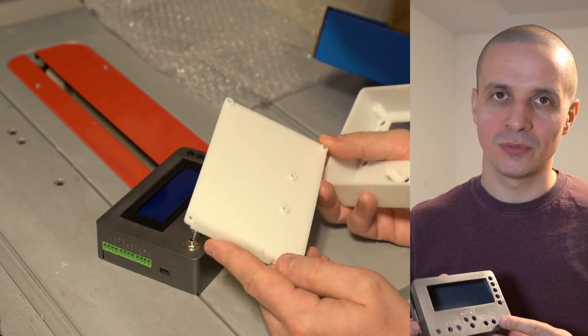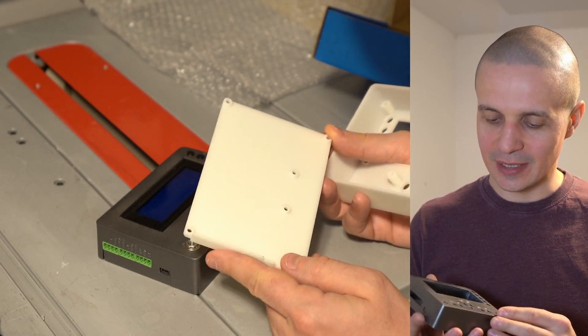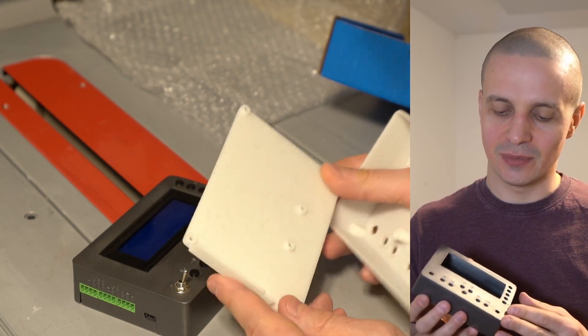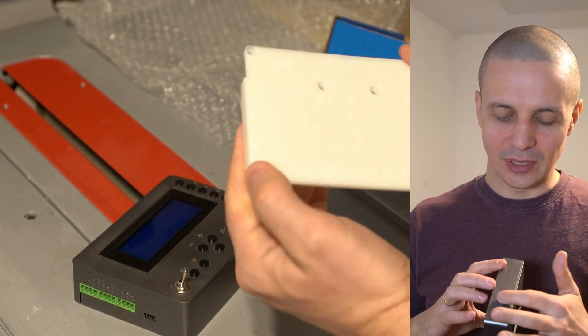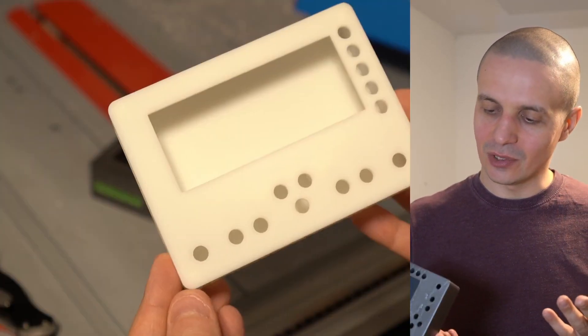But the problem with regular FDM printing is that the lines are usually quite visible and the layers are also visible.